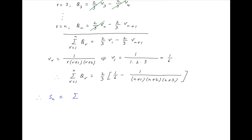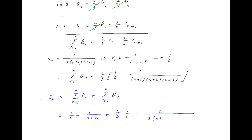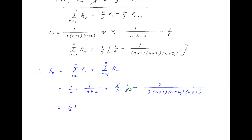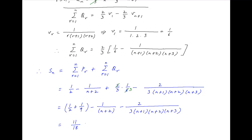Substituting the values of summation p_r and summation q_r, S_n equals 1/2 minus 1/(n + 2) plus 2/3 times 1/6 minus 2/[3(n+1)(n+2)(n+3)]. This simplifies to 1/2 + 1/9 minus 1/(n + 2) minus 2/[3(n+1)(n+2)(n+3)]. Therefore, the sum to n terms of the given series is equal to 11/18 minus 1/(n + 2) minus 2/[3(n+1)(n+2)(n+3)]. And this is the required answer.